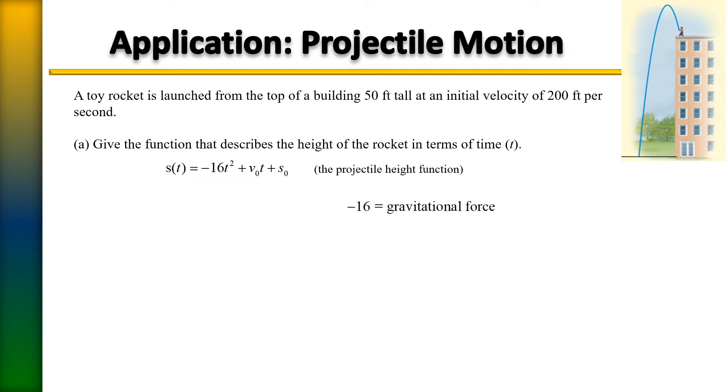Negative 16 here refers to the gravitational constant based on the gravitational force of the earth. And then you have the initial velocity and also the initial height. So plugging those things in, the values known, and here you have it. Your equation is negative 16t² plus 200t plus 50. We were not asked to solve here, just asked to give the function, and that is your function.